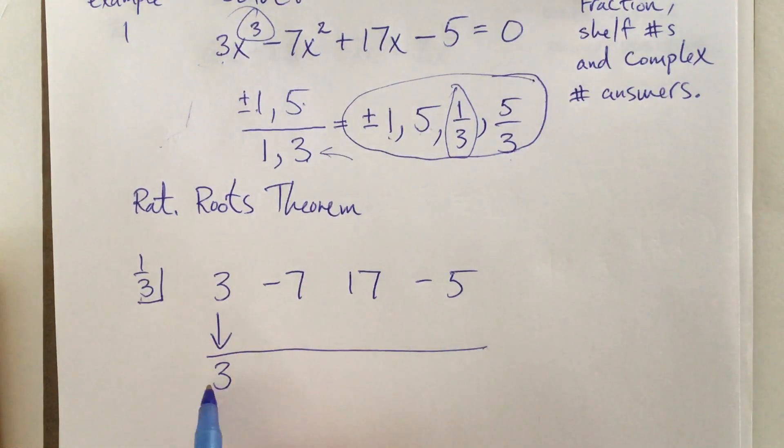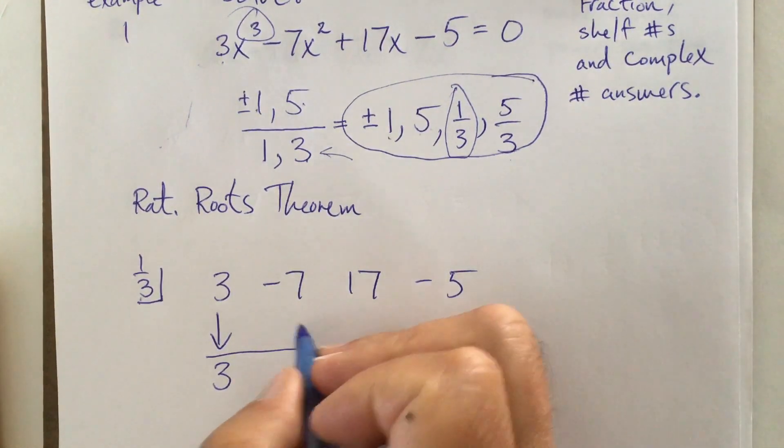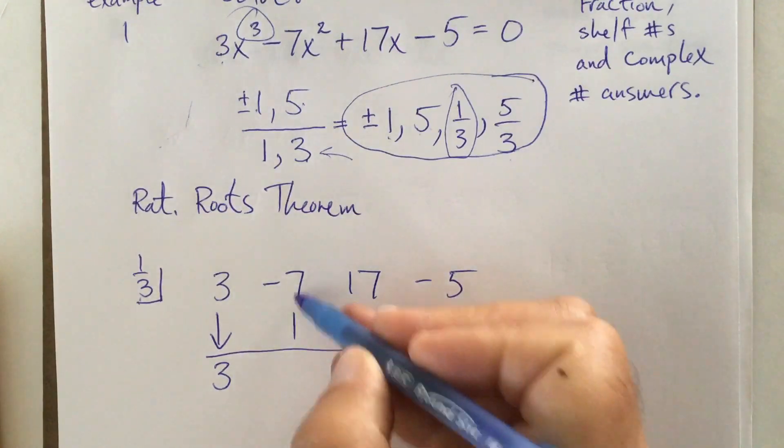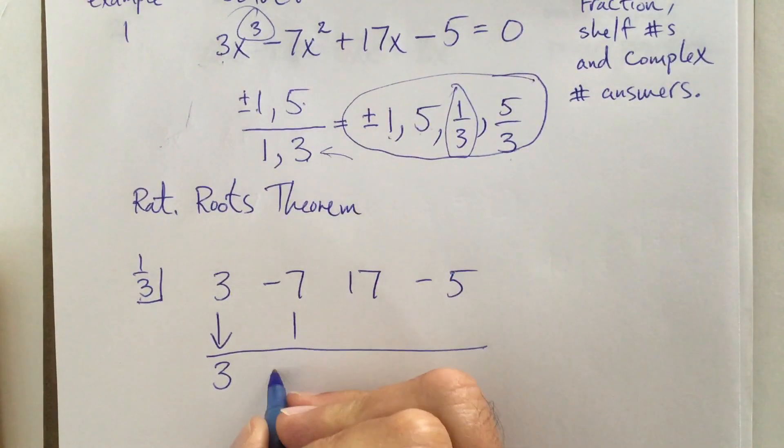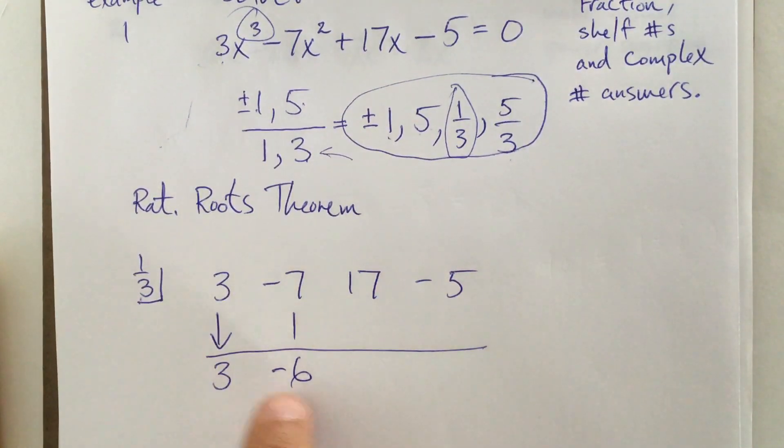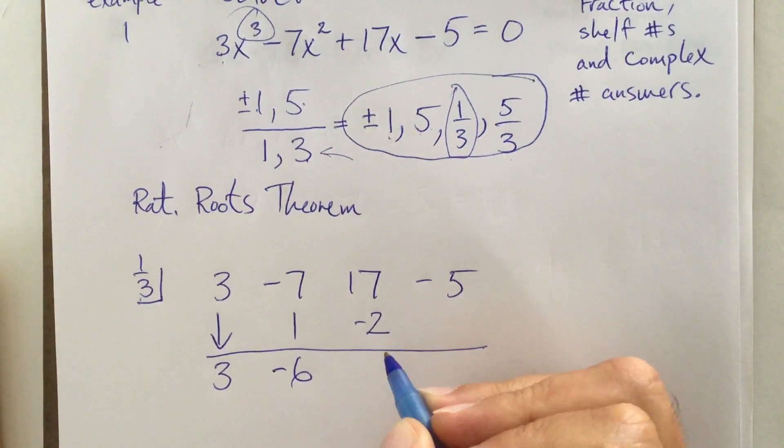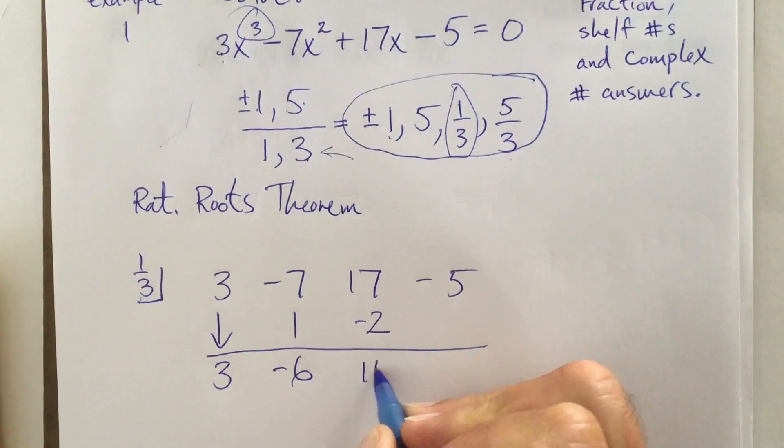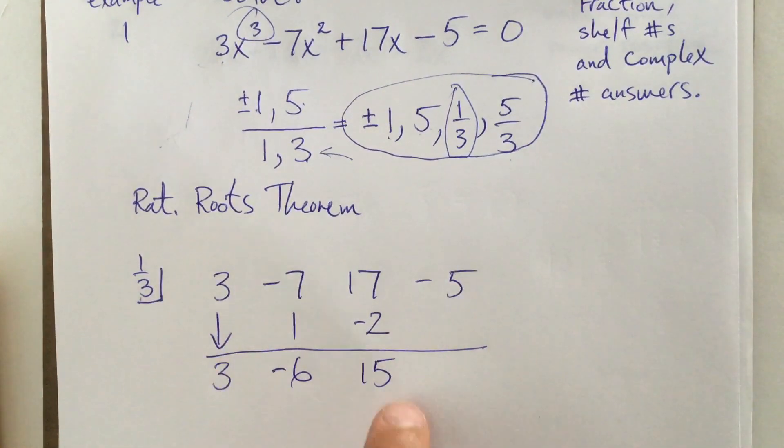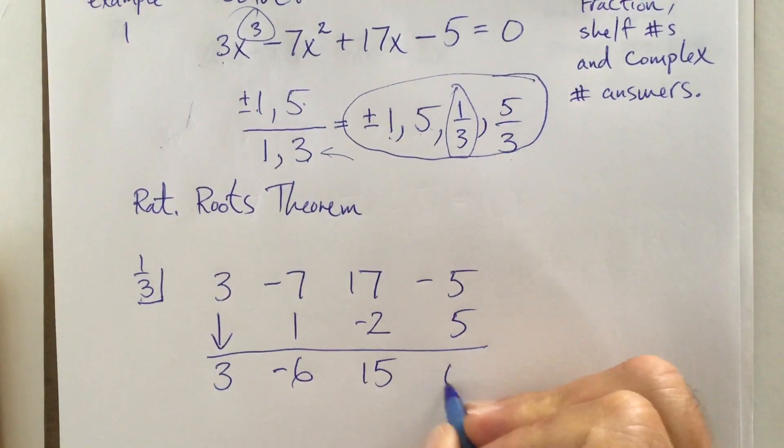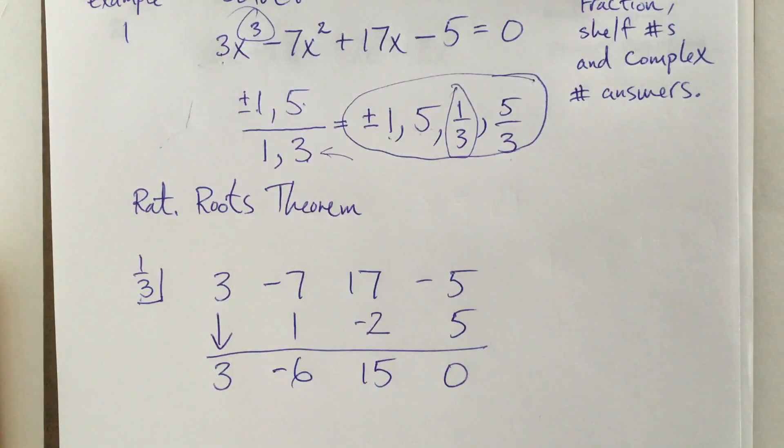Let's multiply. One third times 3. Well, that's easy. One third of 3 is 1. Add down. I get negative 6. What is one third of negative 6? I think it's negative 2. I'm going to add down. I get 15. What is one third of 15? One third times 15 would be 5. And then I go, woo-hoo, totally cool. I got myself a zero.